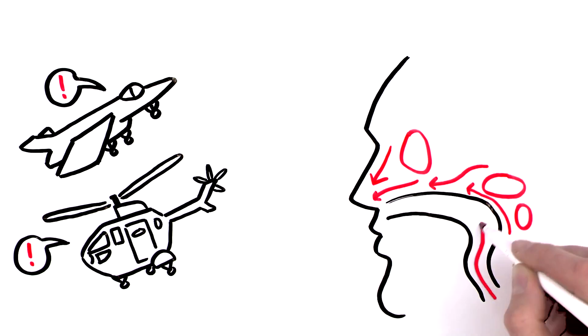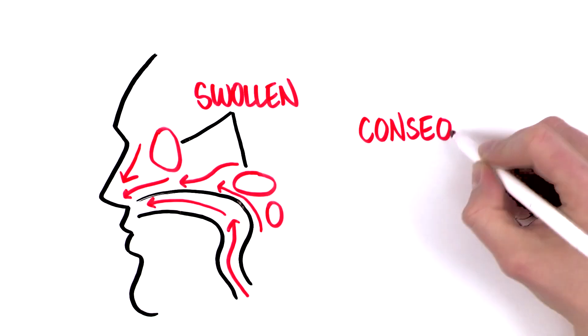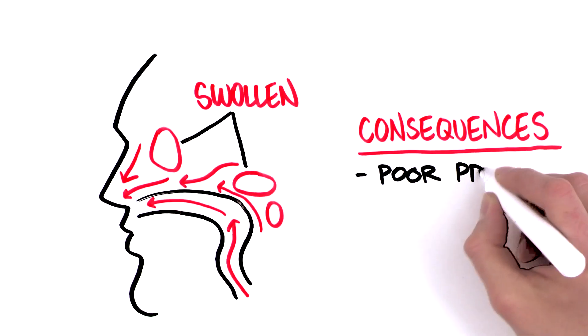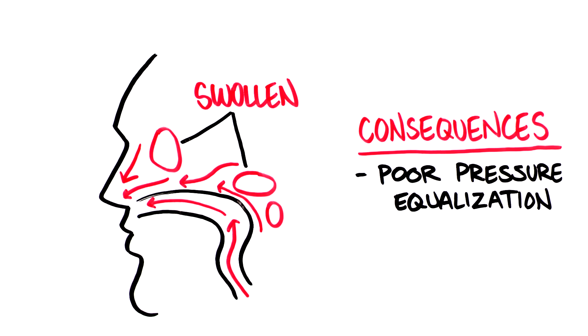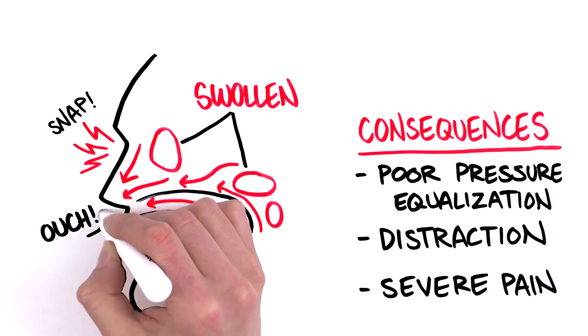In case of a cold, these passages can be swollen, almost shut, so that pressure equalization becomes difficult or can't be achieved at all. As a consequence, the periosteum might detach, resulting in severe pain.